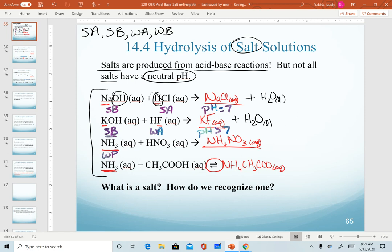In our third example, we have a weak base combining with a strong acid. Because we have the strong acid here, we will predict that this salt is going to be acidic, that it will have a low pH.